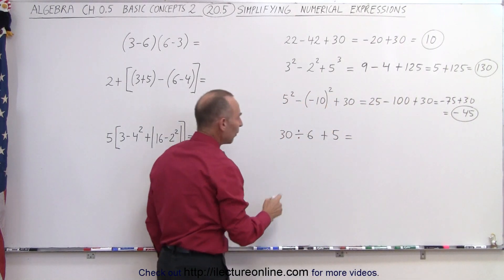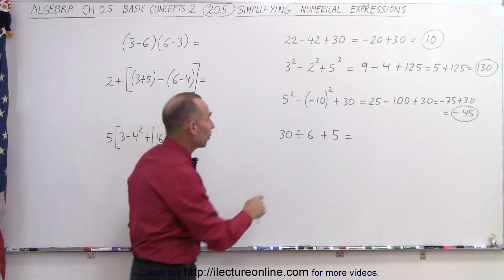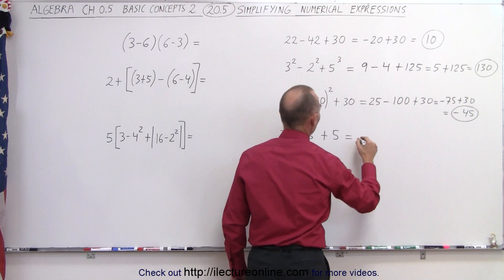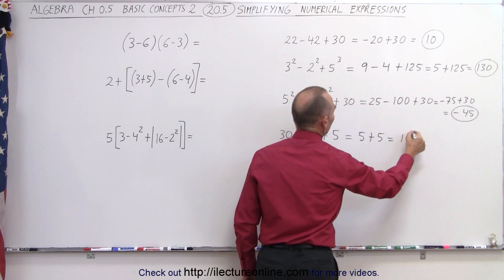On the next one, we have a division and an addition. Division gets priority over the addition, so we must do that one first. 30 divided by 6, that's equal to 5. We still have plus 5. When we add those together, we get 10.